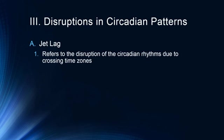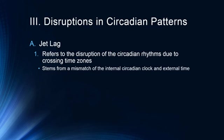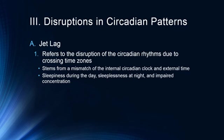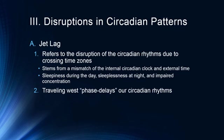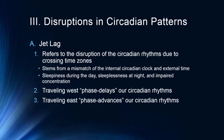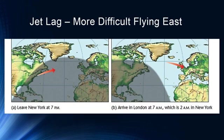Other disruptions in circadian patterns can occur due to jet lag, which refers to the disruption of the circadian rhythm from crossing time zones — a mismatch of the internal clock and external time. Symptoms include sleepiness during the day, sleeplessness at night, and impaired concentration. Traveling west causes a phase delay; traveling east causes a phase advance, and is actually more difficult — people recover from westward travel more easily than from eastward travel.